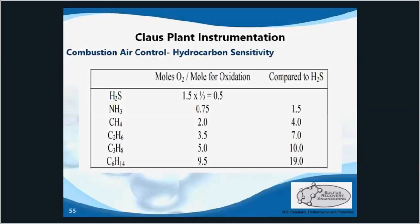This slide shows why we want upstream amine and SWS units to remove as much of the hydrocarbons as possible. Where H2S would only need half a mole of O2 for complete oxidation, methane (CH4) needs 2 moles — which is 4 times as much as H2S. And propane needs 10 times as much oxygen. This is why we want to keep the hydrocarbon content down — it'll minimize our extra air needed and keep our combustion air control steady.